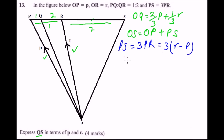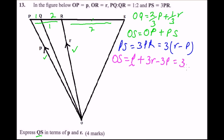Going back, OS equals OP plus PS, which is p plus (3r minus 3p). This simplifies to 3r minus 3p plus p, giving us OS equals 3r minus 2p.